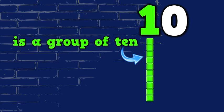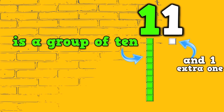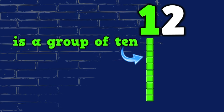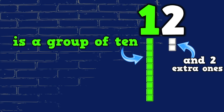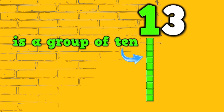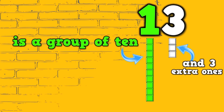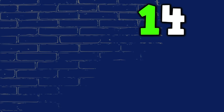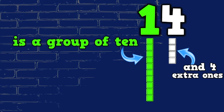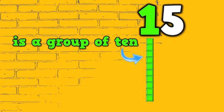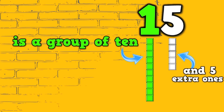Ten is a group of ten and zero extra ones. Eleven is a group of ten and one extra one. Twelve is a group of ten and two extra ones. Thirteen is a group of ten and three extra ones. Fourteen is a group of ten and four extra ones.